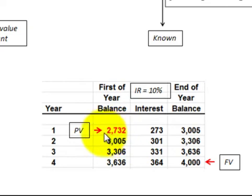Let's take the case here where it has a present value of $2,732, that loan. And what we do is say it has an interest rate of 10%. So we take that yearly interest rate times the $2,732 and we get the interest expense or revenue for the year. Now we add that to the first of the year balance and we get the end of year balance.